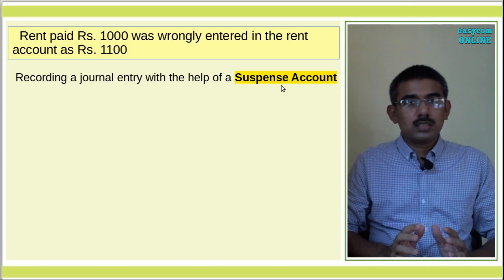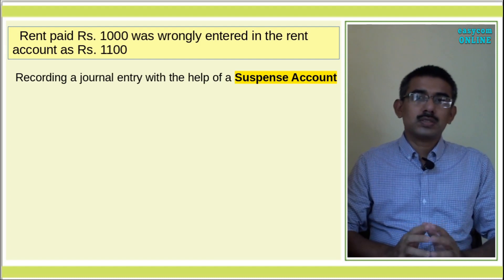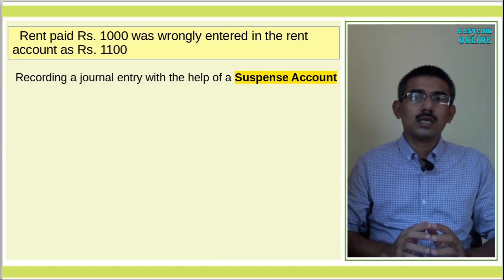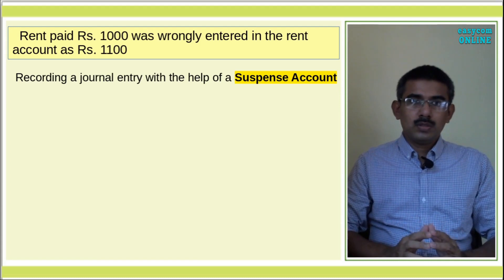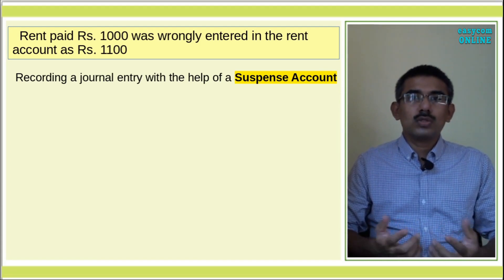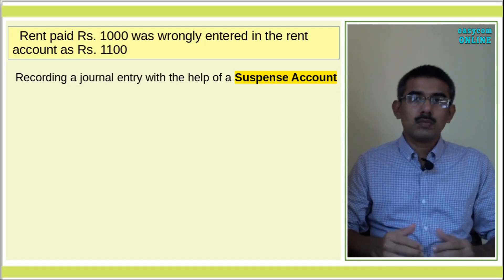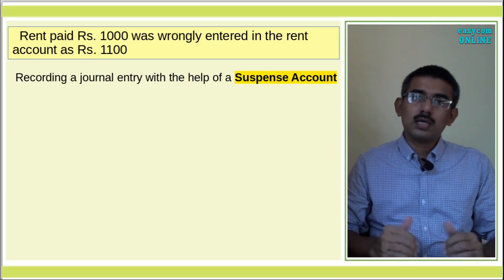The second method rectifies it with a journal entry using the suspense account. The suspense account entry involves a credit. If we are rectifying, we will have a debit in the affected account and a credit in the suspense account.